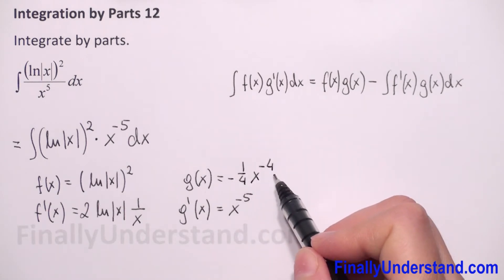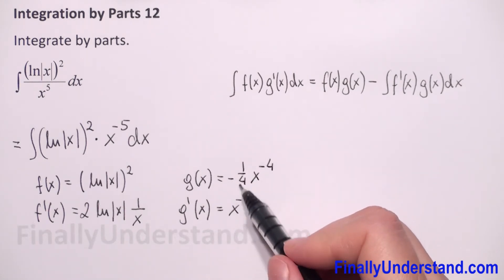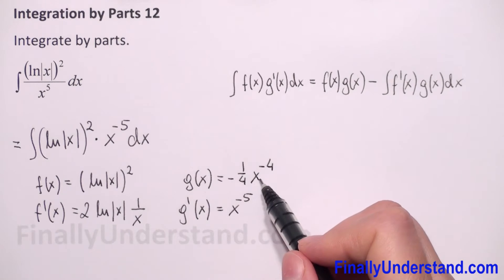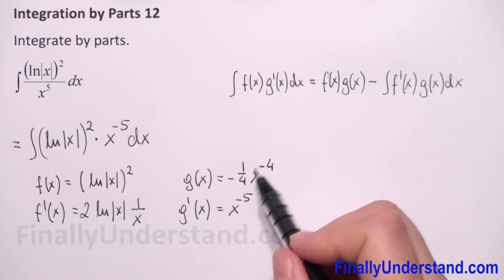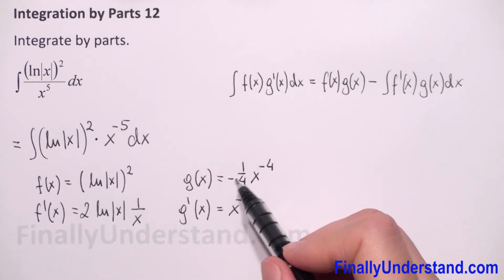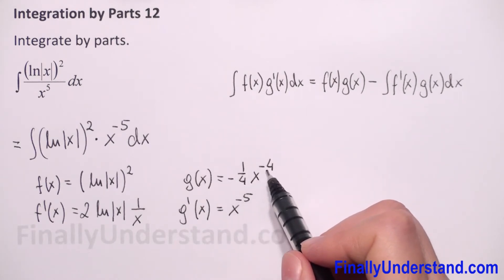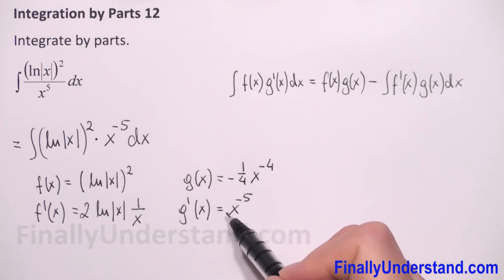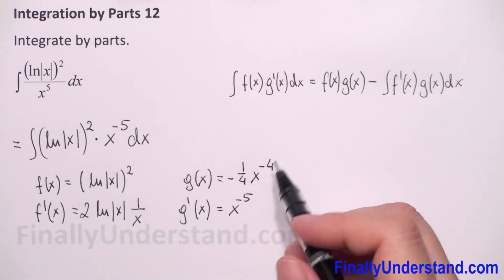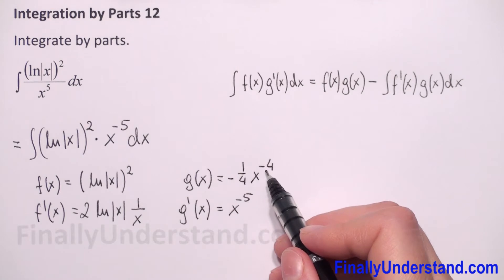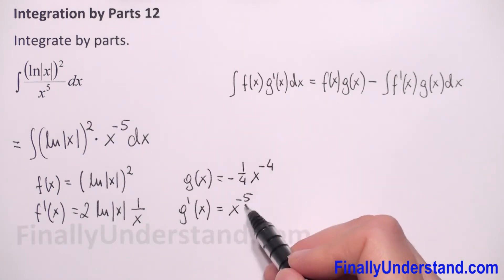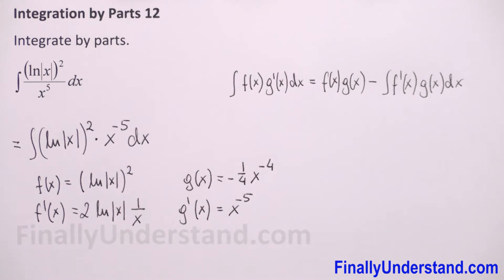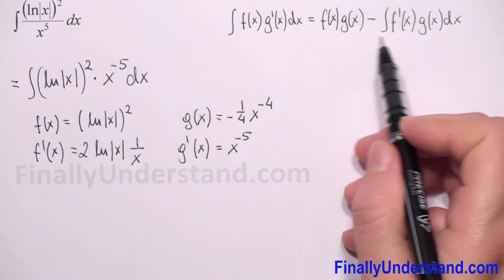Let's check: when we take the derivative of g(x), it will be negative 1 over 4, and the derivative of x to the power negative 4 — we bring the negative 4 down — so it will be negative 1 over 4 times negative 4, which gives us positive 1. And x will be to the power negative 4 minus 1, so it will be negative 5. So everything is correct.